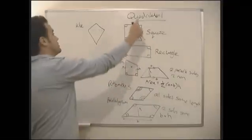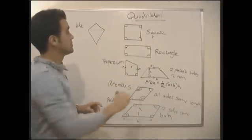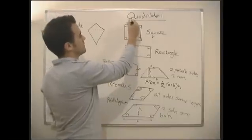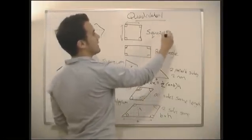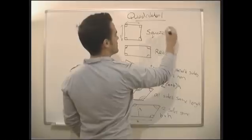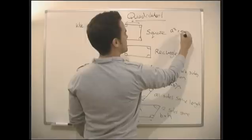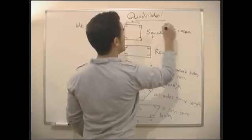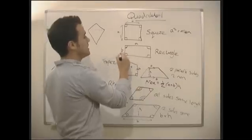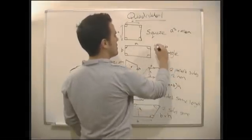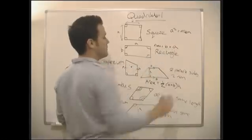That's all our four-sided shapes — our quadrilaterals — and we'll be asked lots of questions on them. The area of a square is just the side squared, so it's a², where a is one of the sides. And if we have sides a and b for a rectangle, the area is just b times a.